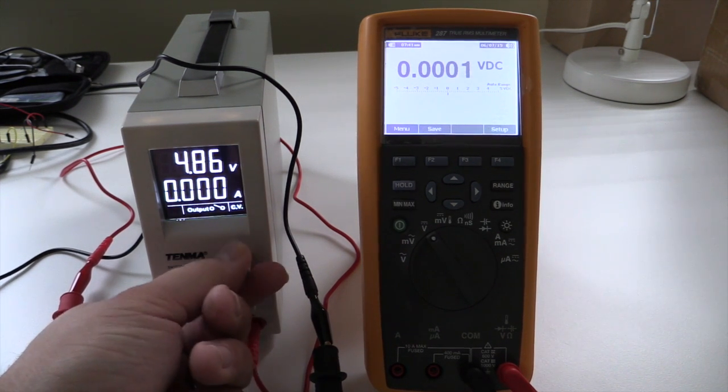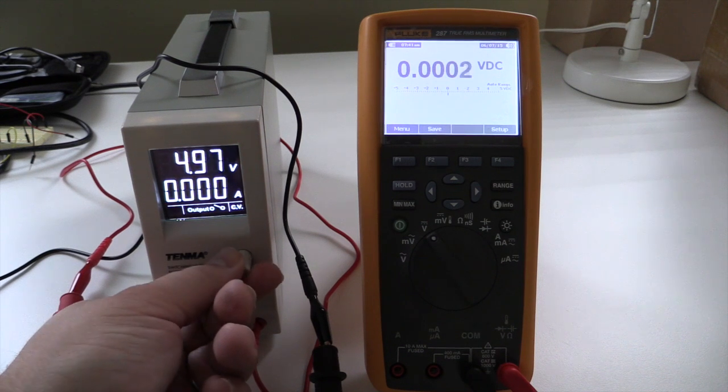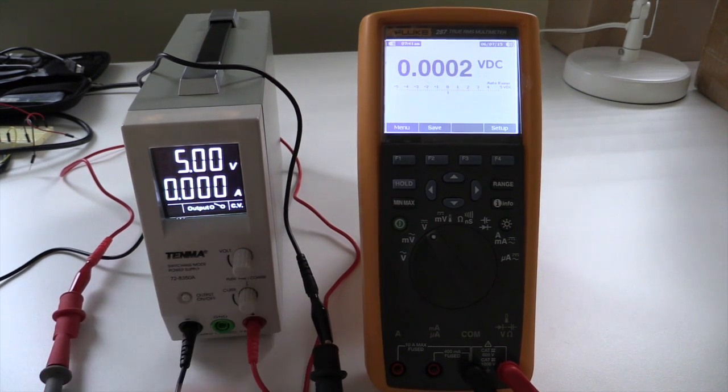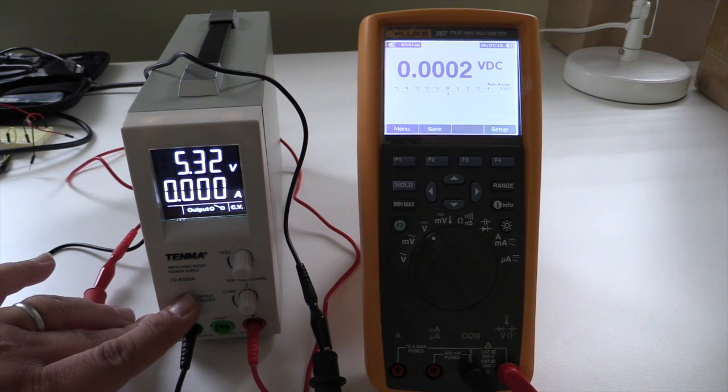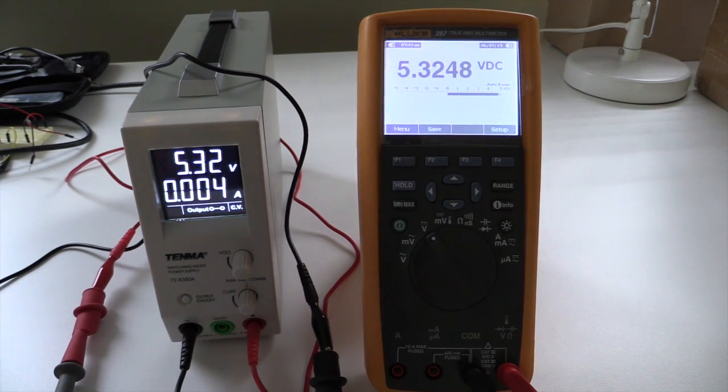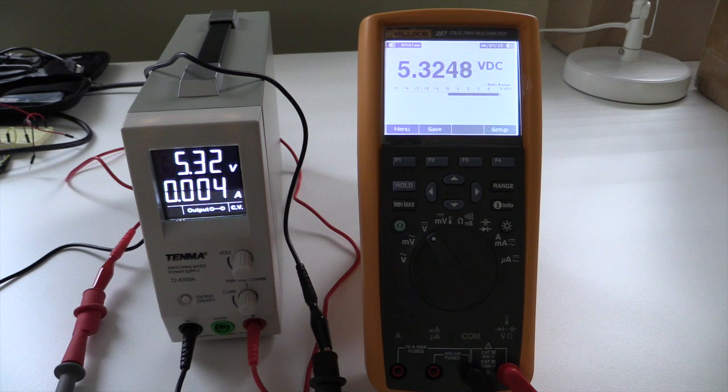Set to 5, but it says 5.32. When I close the output, you'll notice that according to the Fluke that 5.32 is correct.